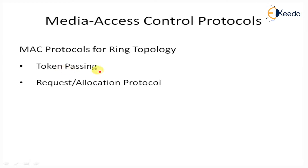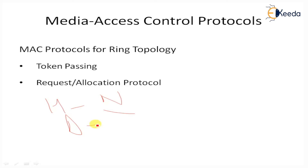The second protocol is the Request Allocation Protocol, RAP, which is a collision-free protocol. Time is divided into uniform slots, and each slot is divided into two sections: a header section and a data section. The header section contains N mini-slots, where N is the number of nodes in the network. The data section is divided into M data mini-slots, or DMS. In order to transmit data, a node first requests a DMS and then waits for an allocation.